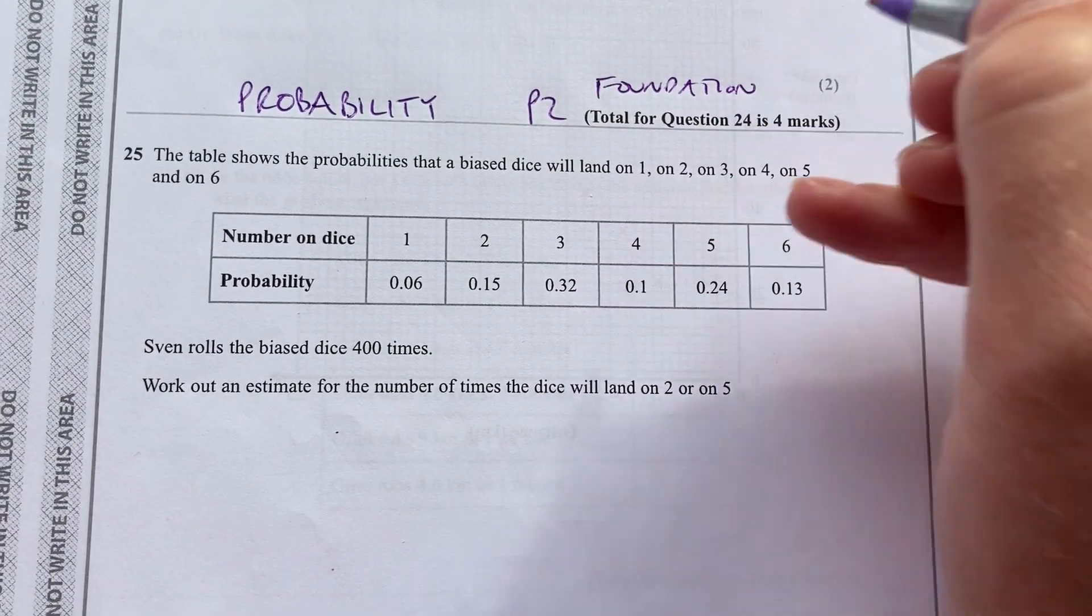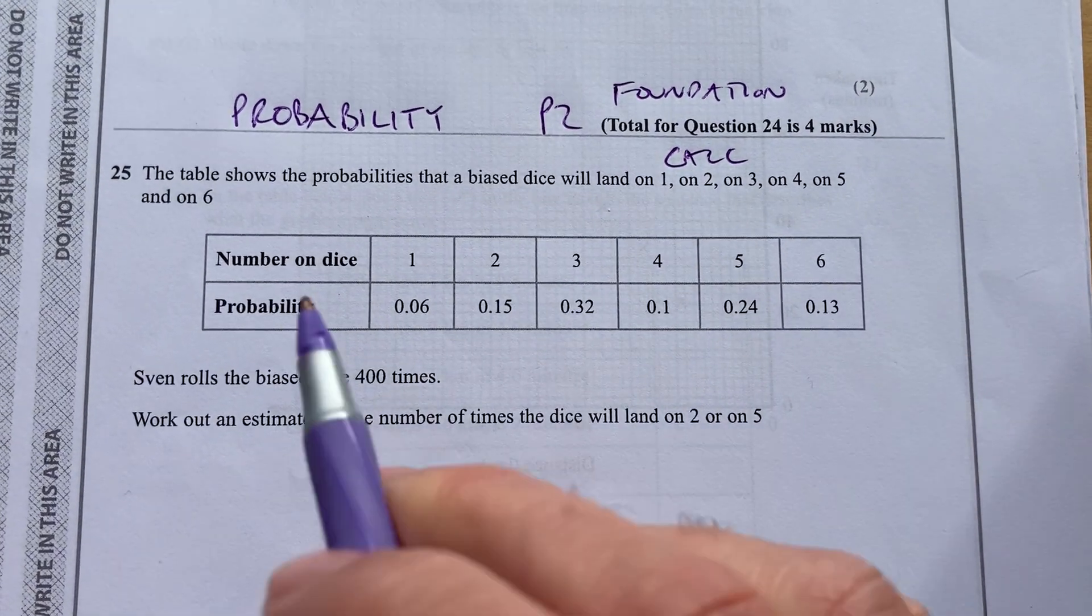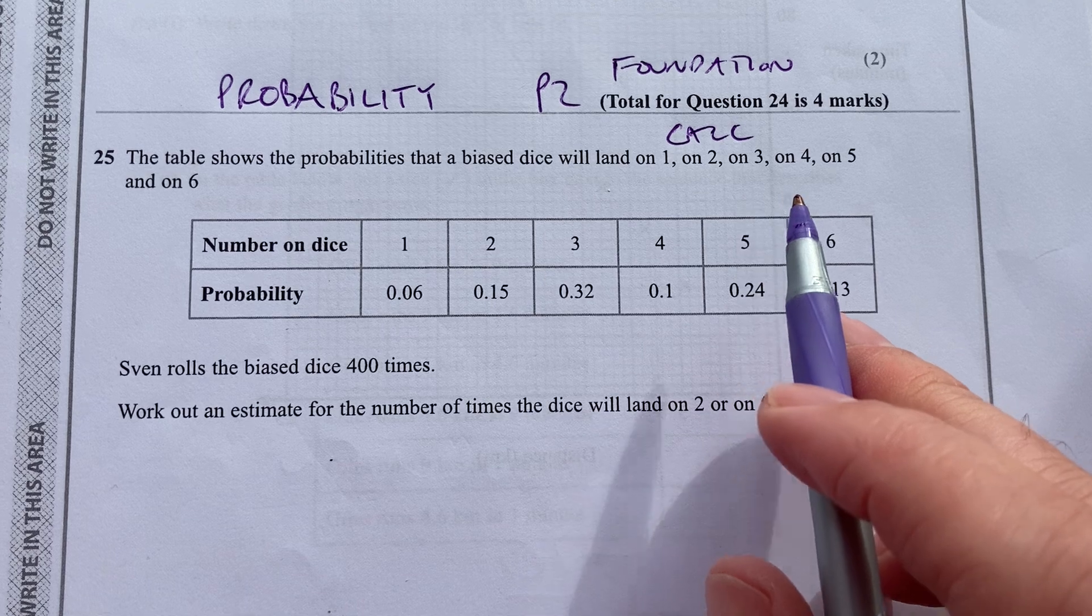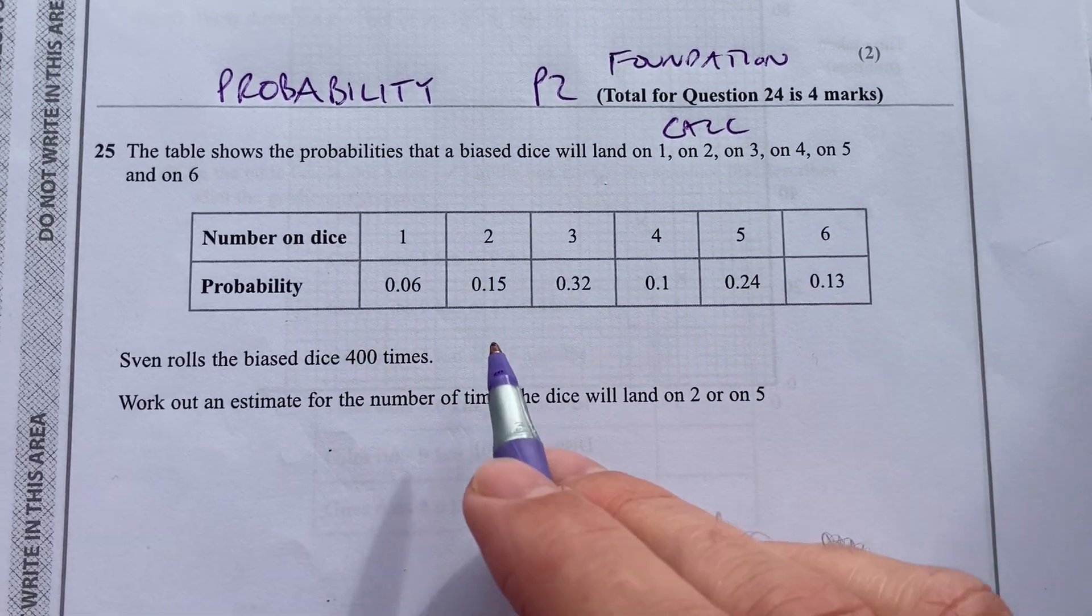So it's a calculator paper, and it says the table shows the probabilities that a biased dice will land on 1, 2, 3, 4, 5, and on 6.